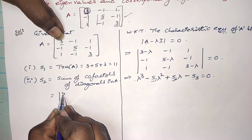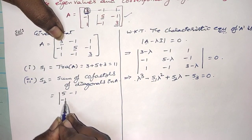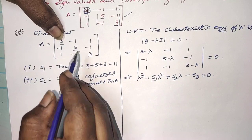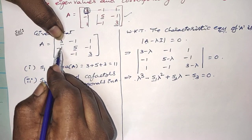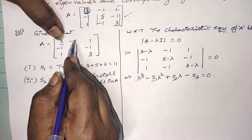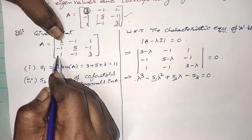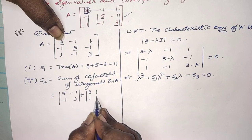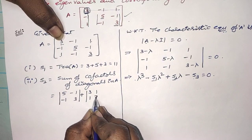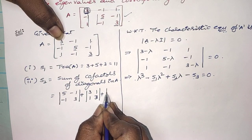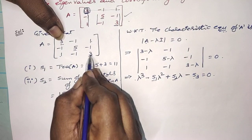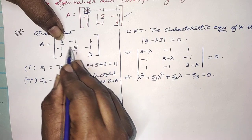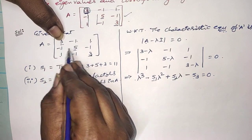So, the cofactor of the first diagonal is the determinant of [5, minus 1; minus 1, 3]. For the cofactor of the second diagonal element, close the second row and second column, giving the determinant of [3, 1; 1, 3]. Plus, the cofactor of the last diagonal: close the last row and last column, giving [3, minus 1; minus 1, 5].